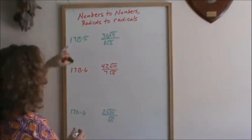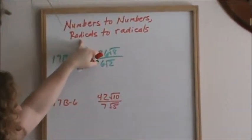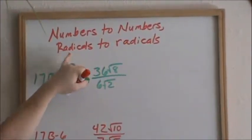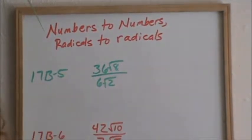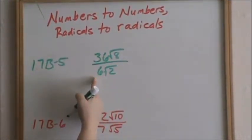Dividing radicals has the same rules as multiplying radicals. In words, do numbers to numbers and radicals to radicals. So here we are at 17b number 5. So radicals to radicals, numbers to numbers when you are dividing.